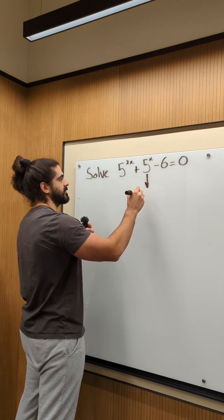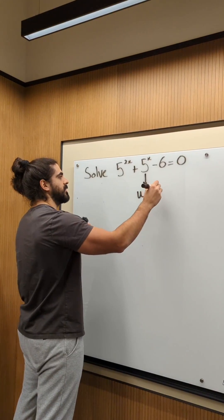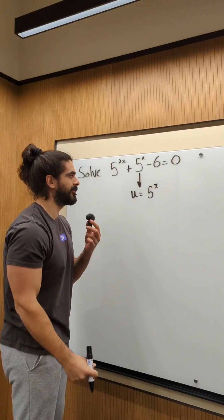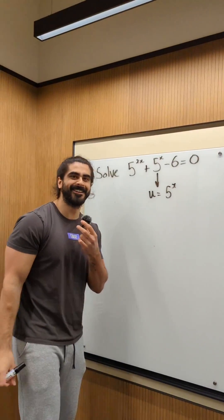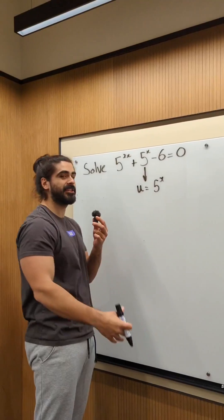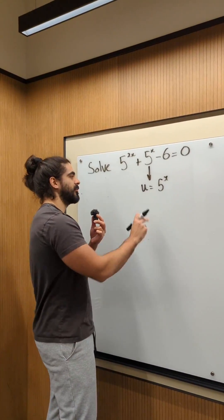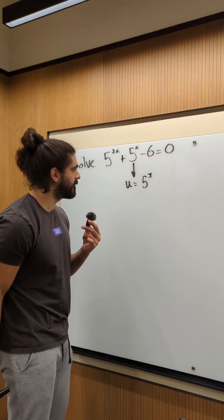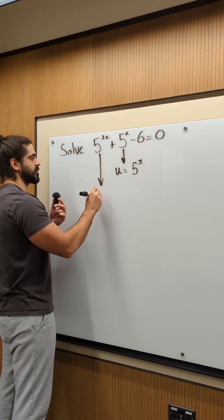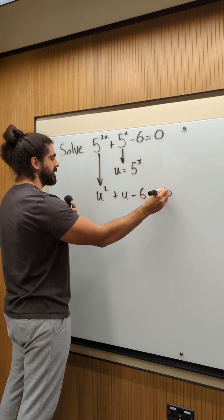So, this is a quadratic. I'm going to let u equal phi to the power of x. I don't like to use y — because when we do substitution, like integration by substitution, we always use u; we use y for other contexts. This will be u squared plus u minus 6 equals 0.